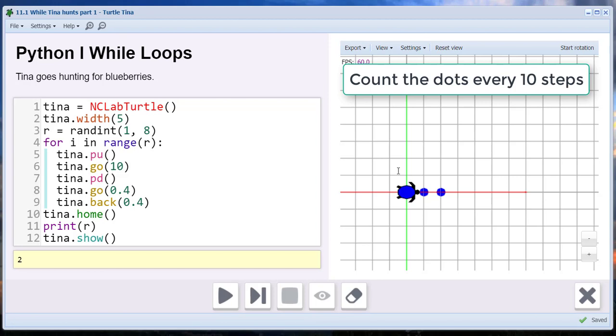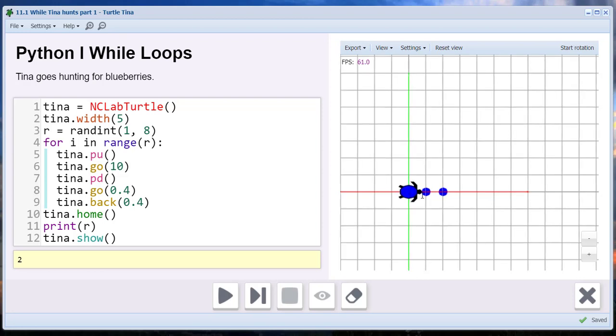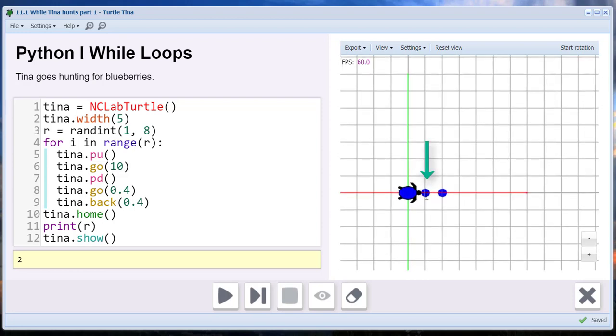Our objective is to have Tina count the randomly generated dots and print out the total. It's a good idea to analyze the steps before writing the code, so let's do that. Tina's actions will be based on the presence of a colored dot. We can use the keyword on color as our Boolean test. If Tina senses color, true,